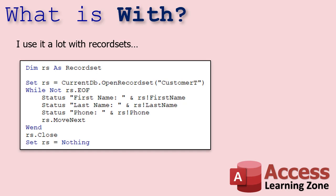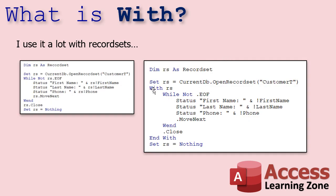I use With a lot with recordsets. With a simple recordset, RS is easy to type — RS.FirstName, RS.LastName. But if I have multiple recordsets with long names, I'll put at least one inside a With block. So it looks like: With RS, while not .EOF — that's RS.EOF — then .FirstName, .LastName, .Phone, .MoveNext — all part of RS. This is especially great with longer recordset names. When you're done, End With and everything goes back to normal.